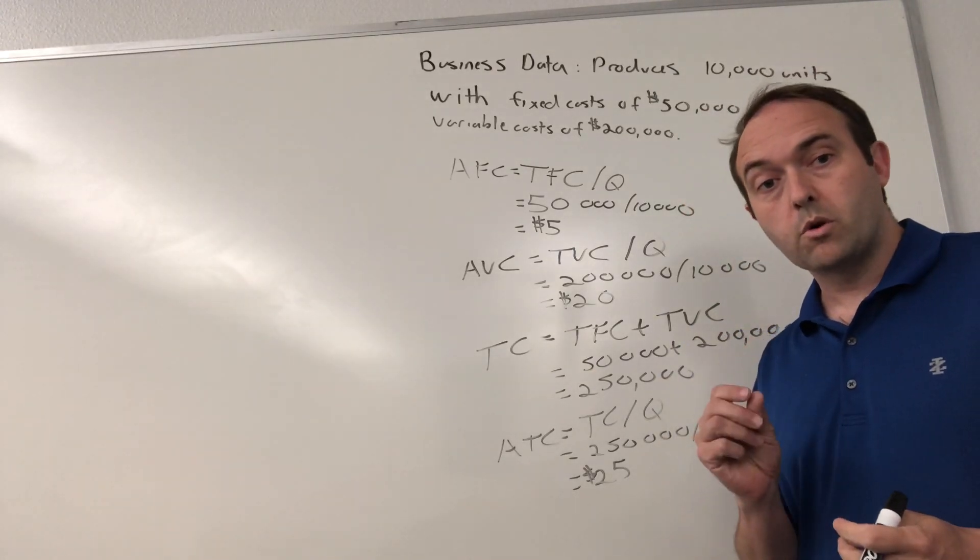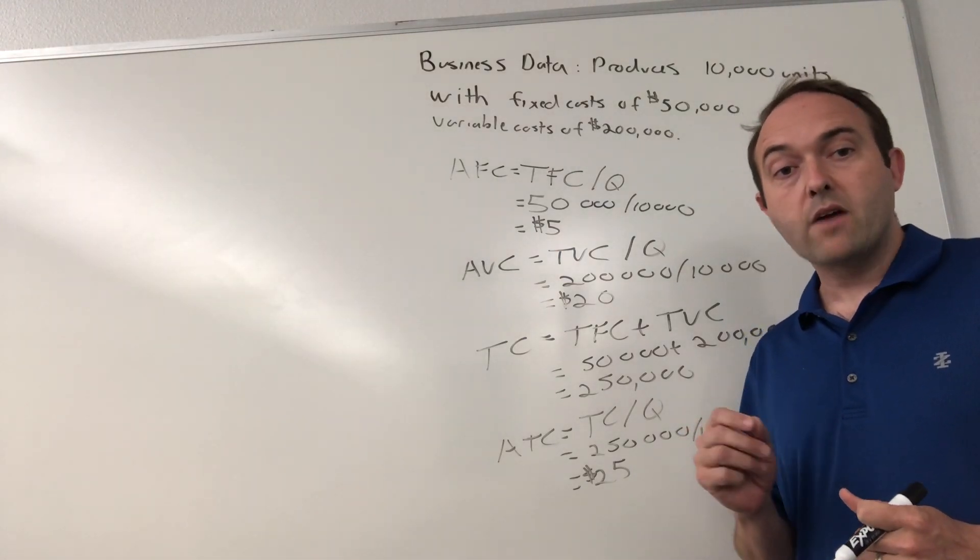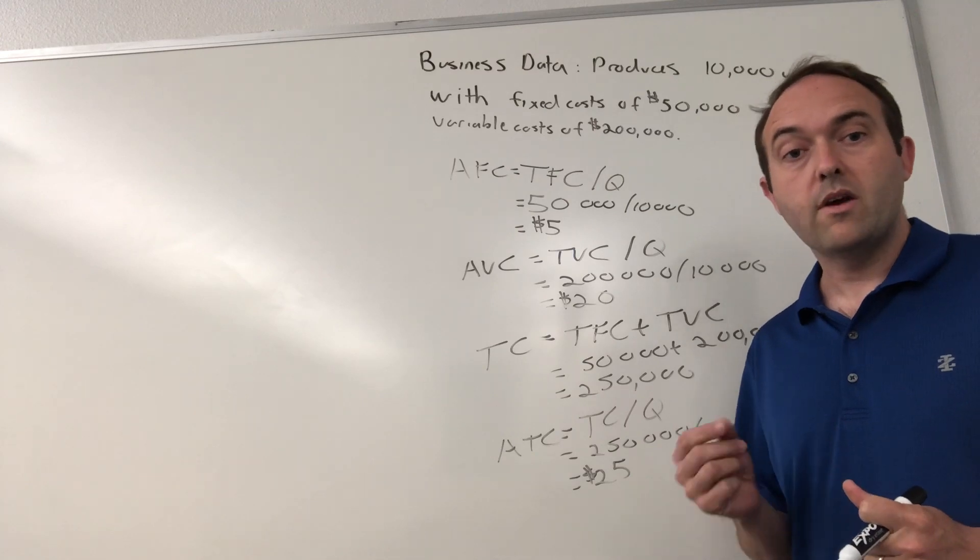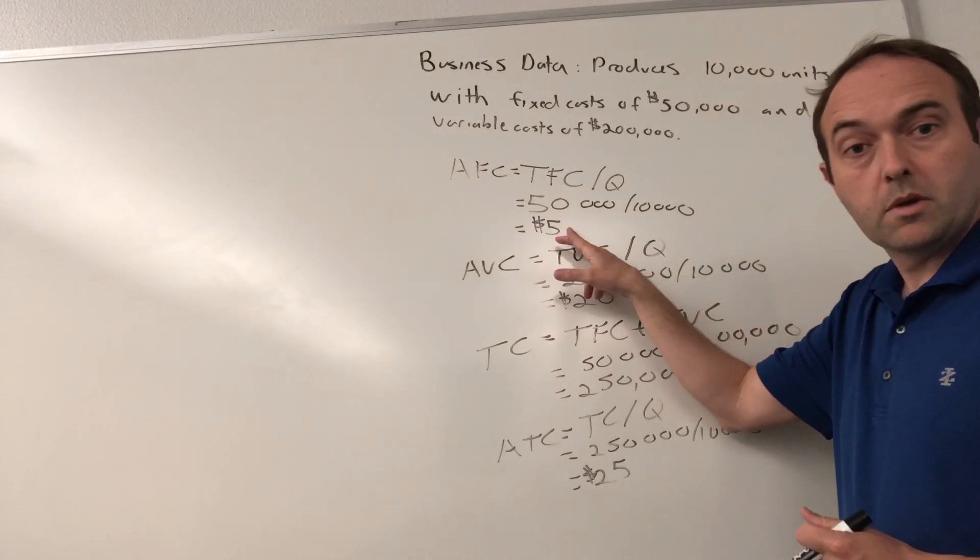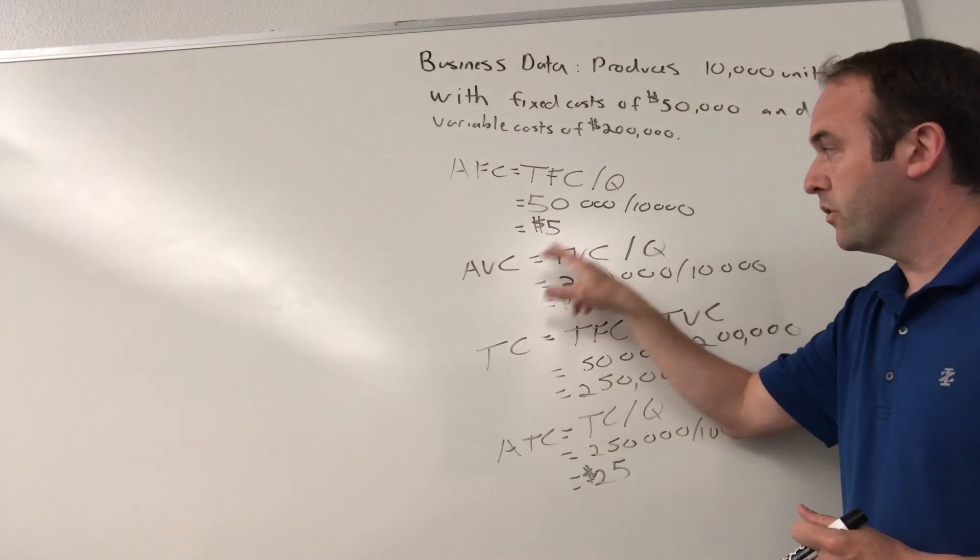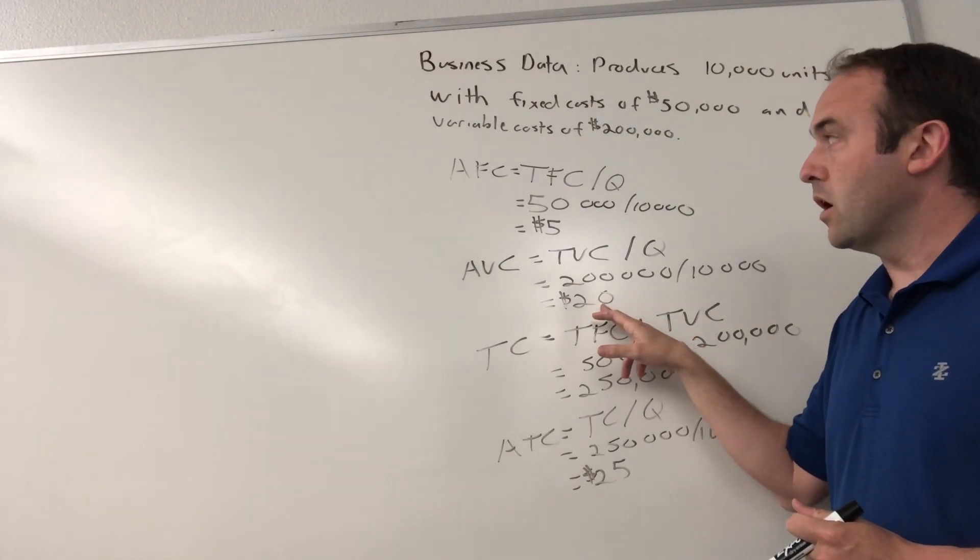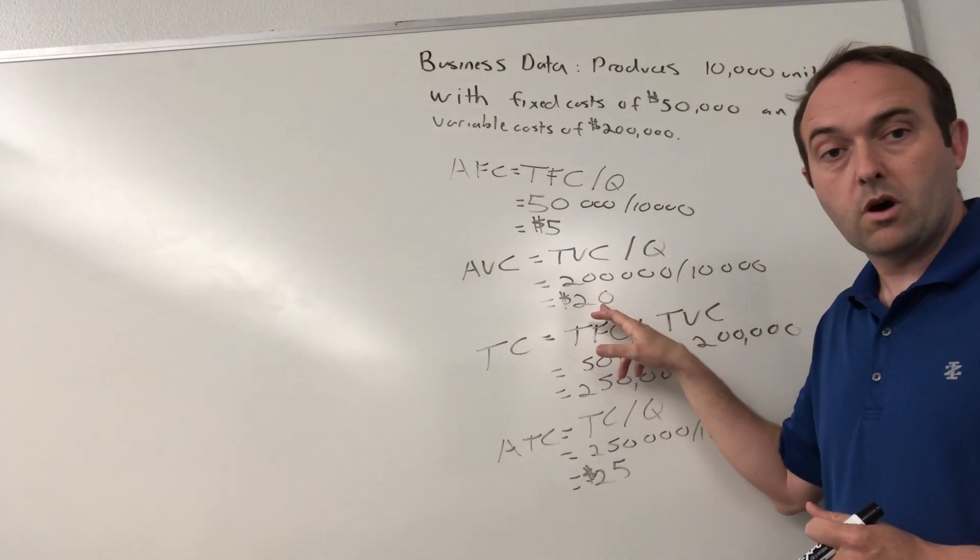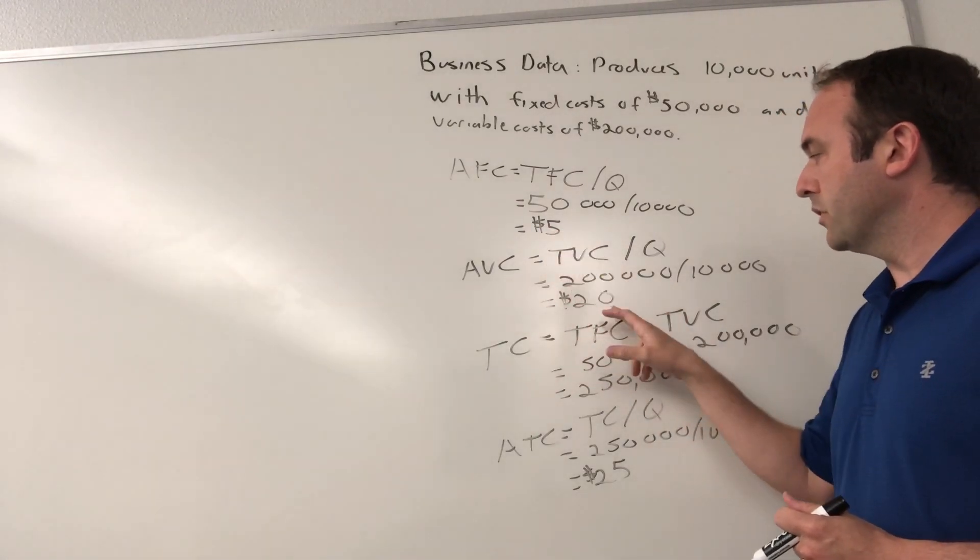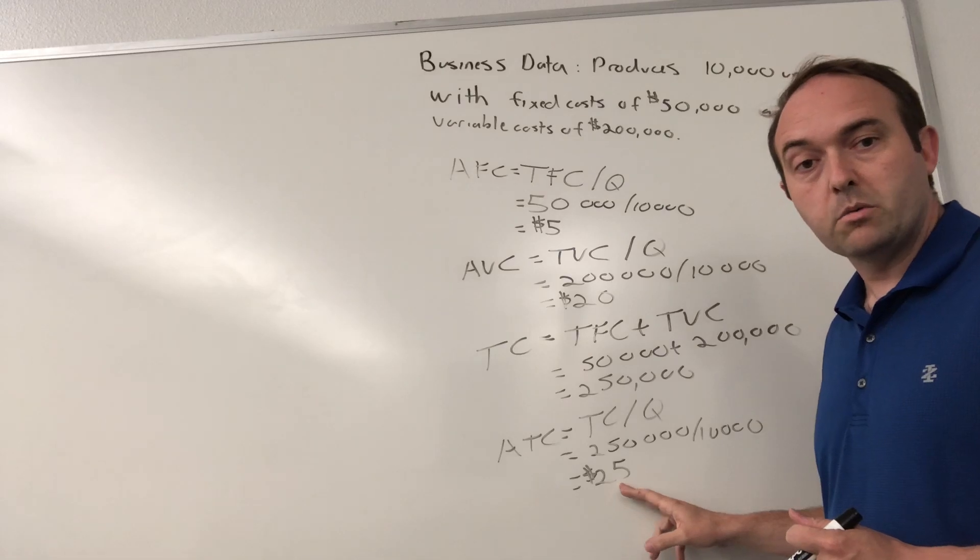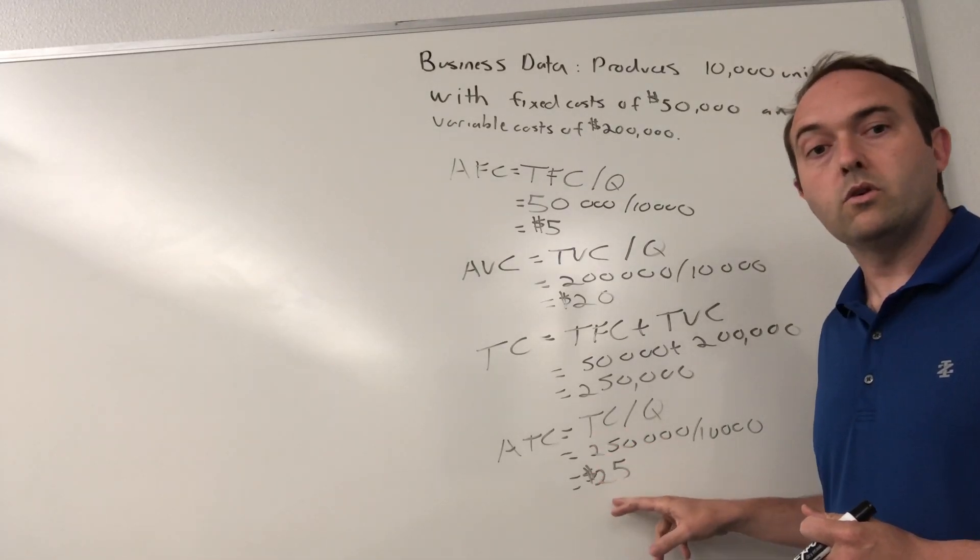An alternative formula for calculating average total costs is average fixed cost plus average variable cost. Average fixed cost we calculated before as $5, and average variable cost as $20. So 5 plus 20 gives us 25. That checks with our value. Sometimes it's good to make this calculation both ways so you can check your work.